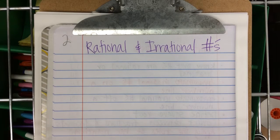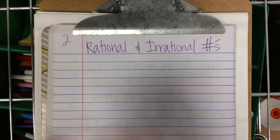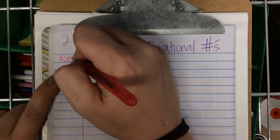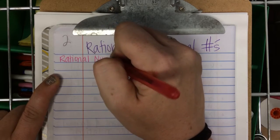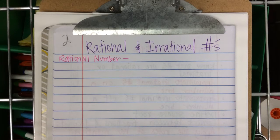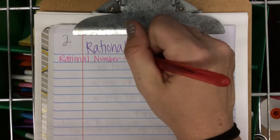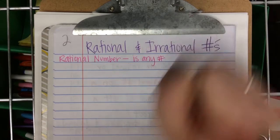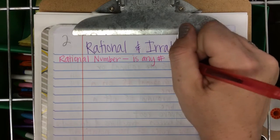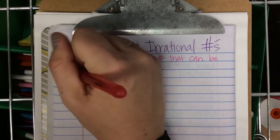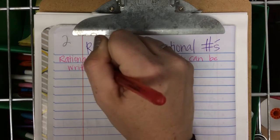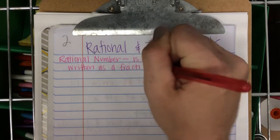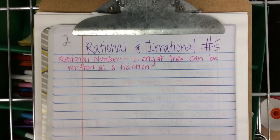Rational and irrational numbers. Let's start out with definitions. A rational number — the main idea — a rational number is any number that can be written as a fraction.